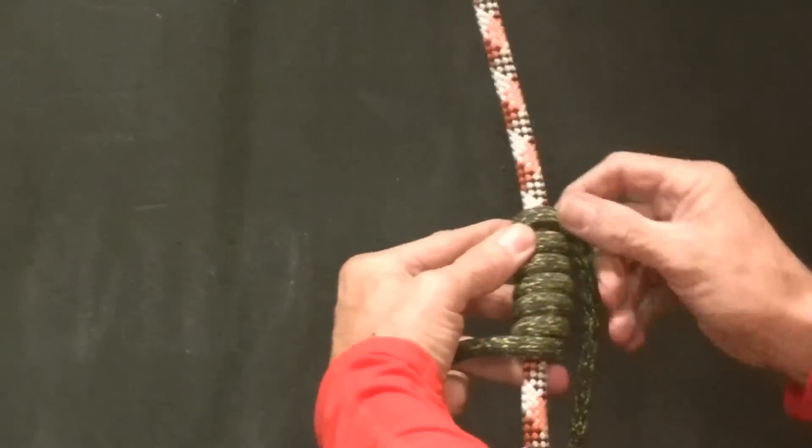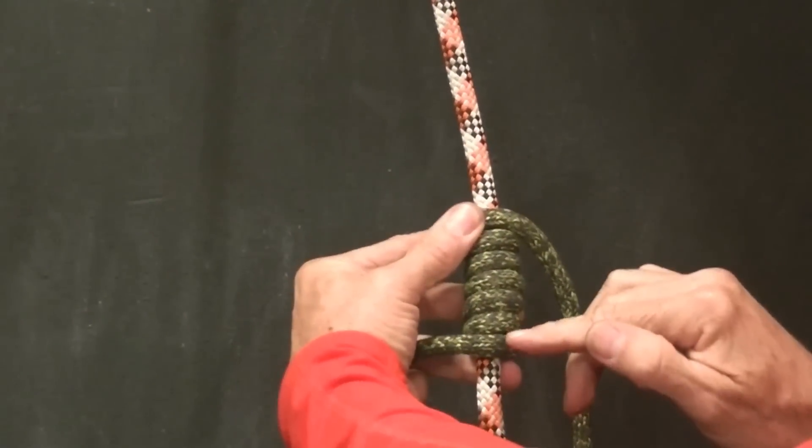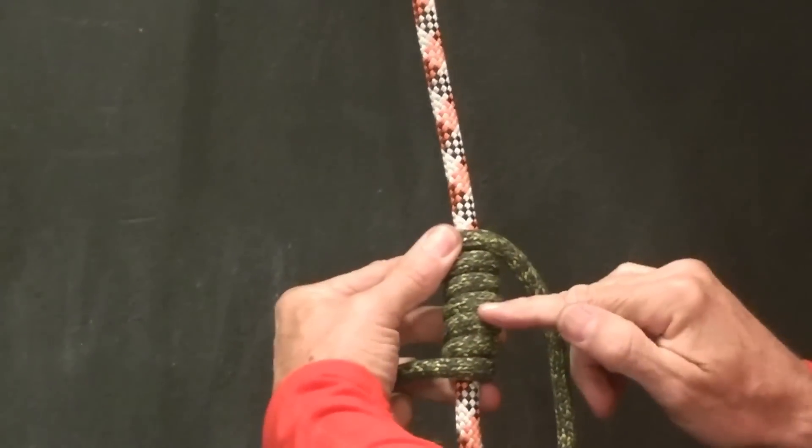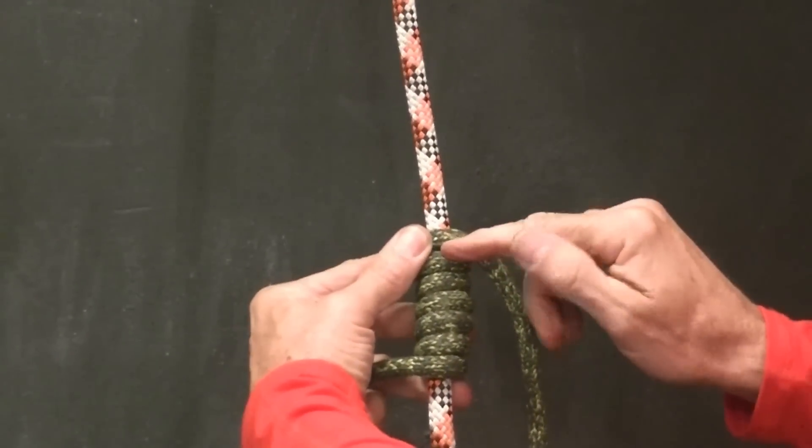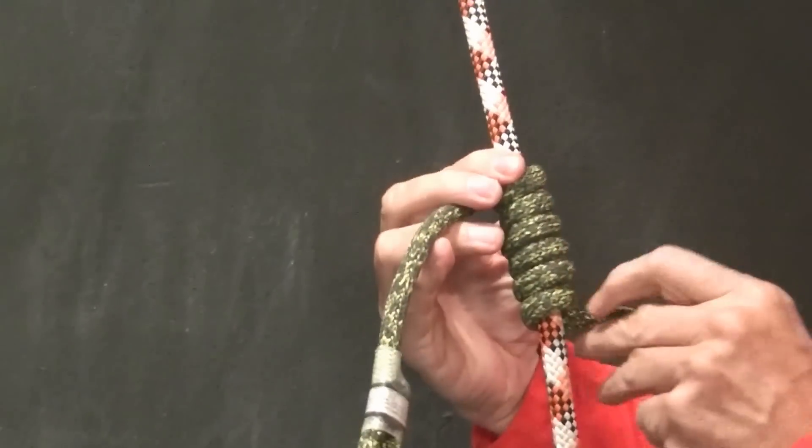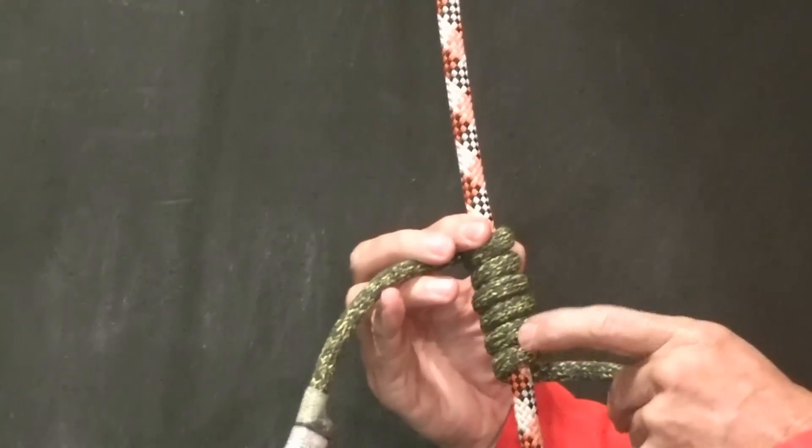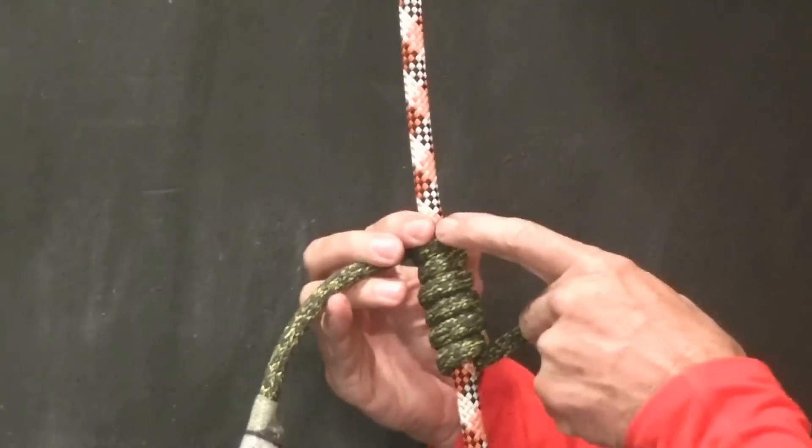When we count these, we want to be careful that we count the spaces on the front side: one, two, three, four, five, six. If we count the back side, we can count the lines: one, two, three, four, five, six.